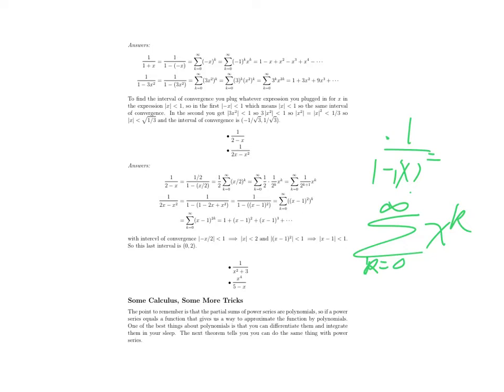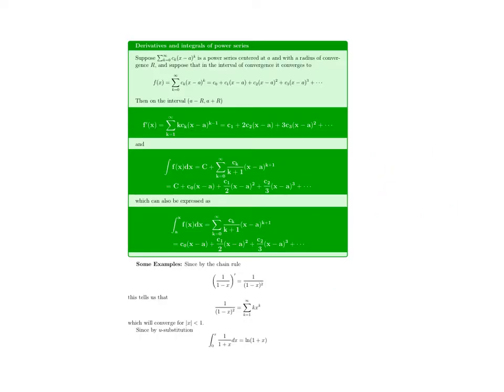What this means is that the partial sums in a power series are polynomials. This means that a non-polynomial function is approximated by these polynomials. Why do we like polynomials? One reason is because we can take derivatives and integrals. Because you can take derivatives and integrals of polynomials so easily, you can take derivatives and integrals of power series just as easily.